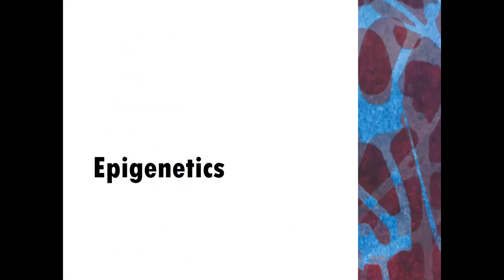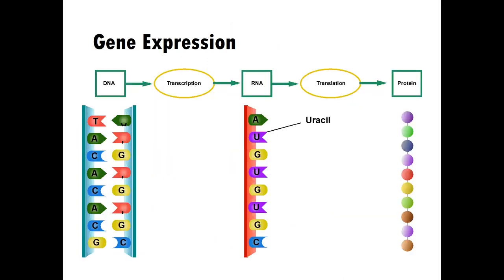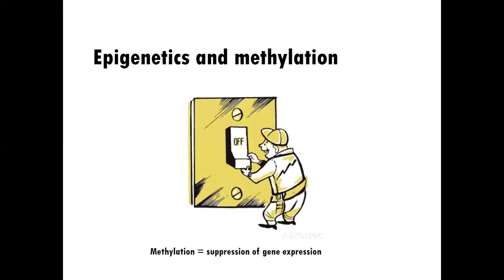Let's begin with epigenetics. You're going to be learning about the role of RNA in transcribing DNA into protein, and what goes on so that your DNA is expressed as protein. You'll also be learning about methylation. Methylation is important because it affects gene expression — when part of your DNA is methylated, it suppresses gene expression.